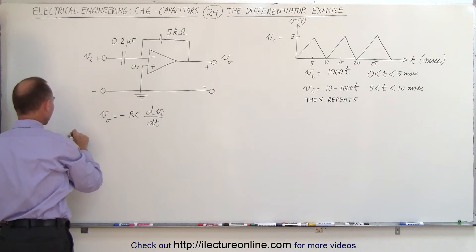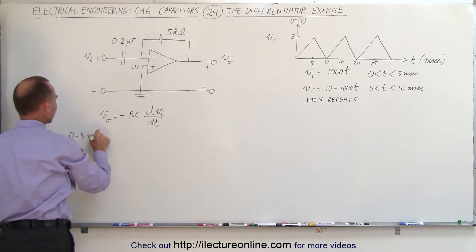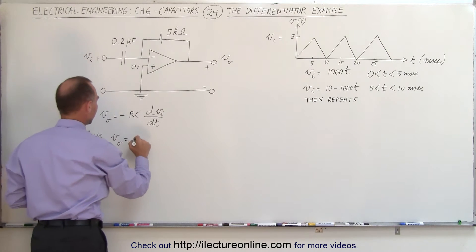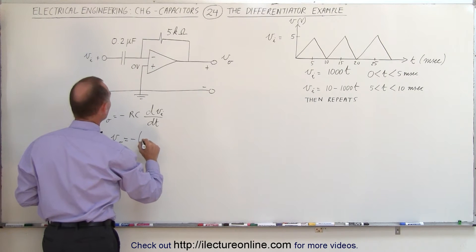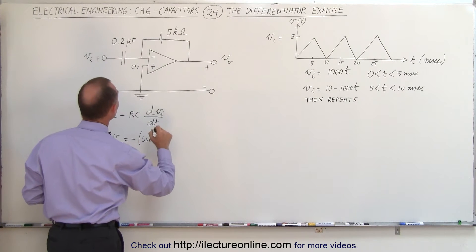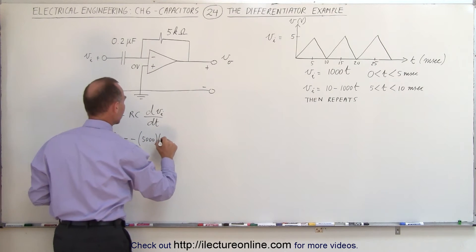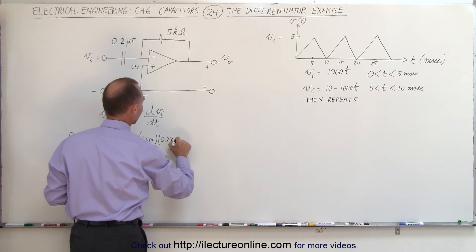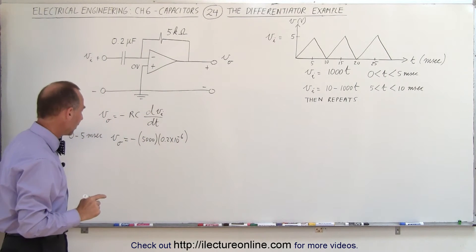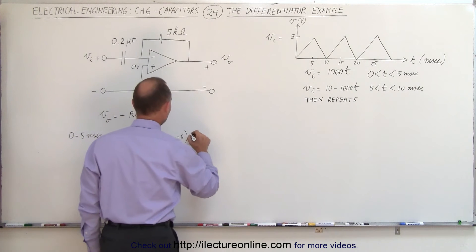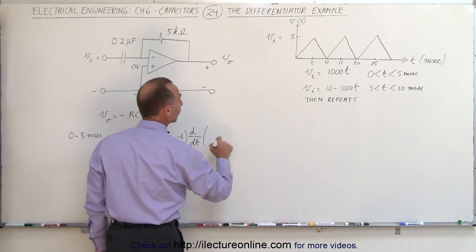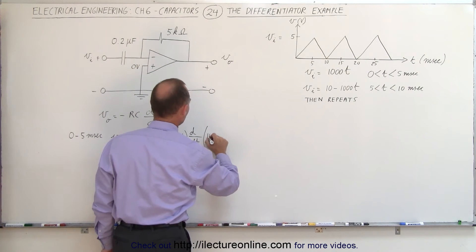From zero to five milliseconds, the output voltage equals minus R times C, where R is five kilohms (five thousand ohms) and C is 0.2 times ten to the minus six. That works out to one one-thousandth, times the rate of change — the d/dt — of the input voltage, which is one thousand t.